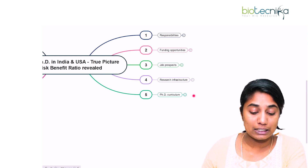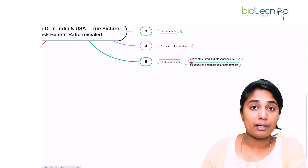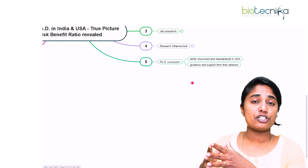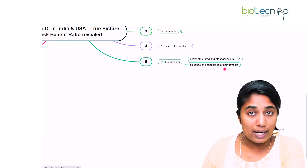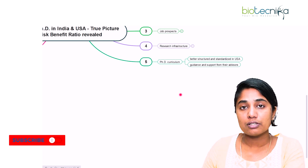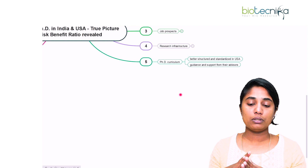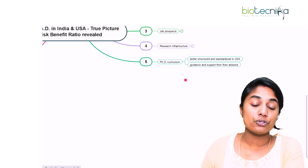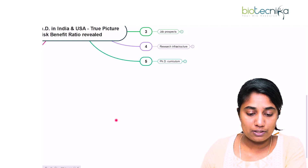The fifth point is the PhD curriculum itself. In USA, the PhD curriculum is better structured and standardized — you have prescribed options to choose your coursework and a clear schedule for milestones. The guidance and support from advisors is very straightforward and structured, so you know the curriculum before you enter the course. In India, it is not as structured and depends on university to university and lab to lab. You do get good advice in India, but it is not up to the level of USA.